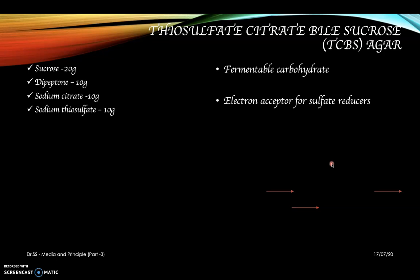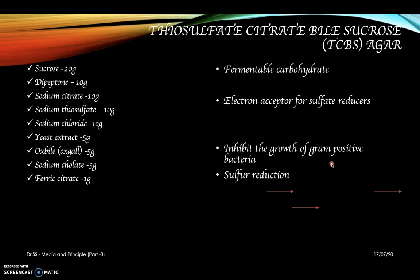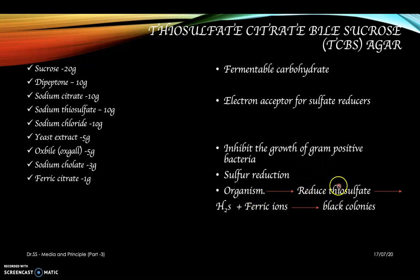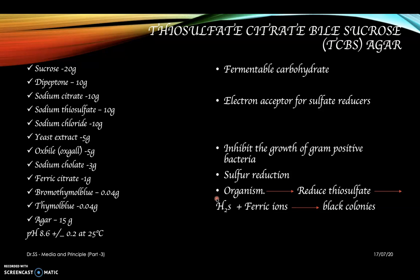Sodium chloride maintains osmotic balance, yeast extract is a nitrogen source, ox bile and sodium cholate inhibit gram-positive bacteria, and ferric citrate is for detection of sulfur reduction — organisms that reduce thiosulfate produce H2S, which combines with ferric ions to produce black colonies. Bromothymol blue and thymol blue are pH indicators. Agar is included and the pH is 8.6 plus or minus 0.2 at 25 degrees Celsius.